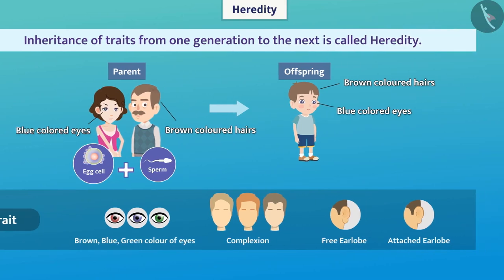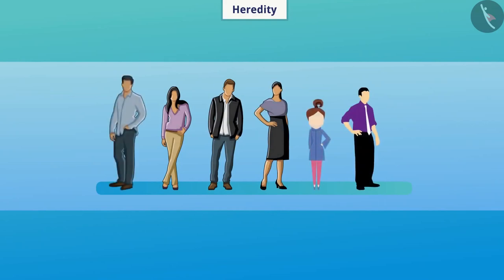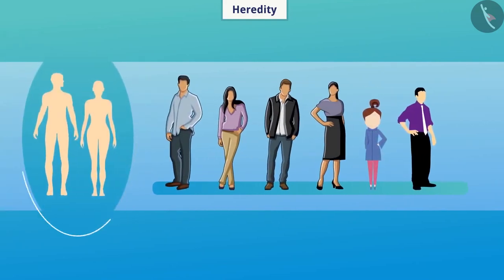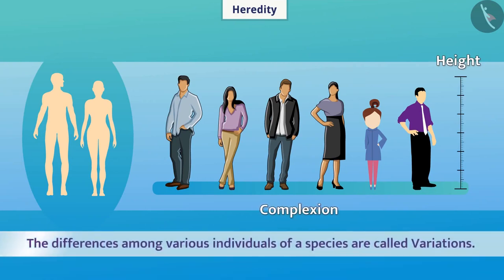If we look at the living organisms of a species, they do not look alike. Their basic structure is similar, but they differ from each other in characteristics such as height, complexion, etc. The differences among various individuals of a species are called variations. Over generations, variations also get accumulated.